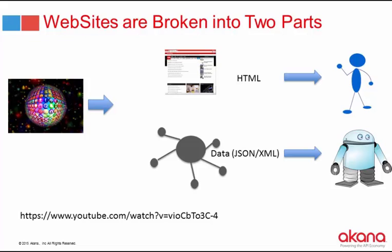I borrowed this breakdown from a JSON-LD YouTube video that does a really good job explaining this. If you want a deeper understanding, that five-minute video is a great resource. The gist is: HTML is human-readable and understood by many clients; data is at the bottom layer, understood by machines.